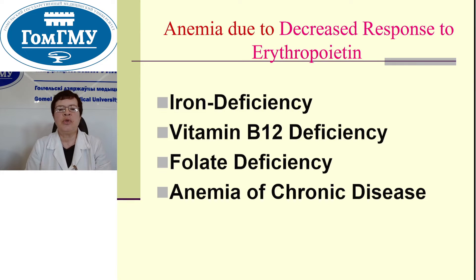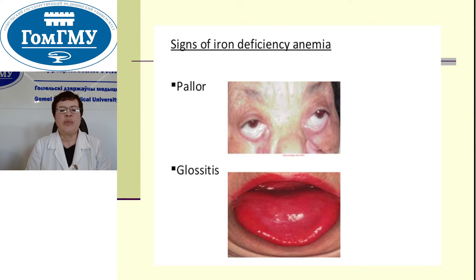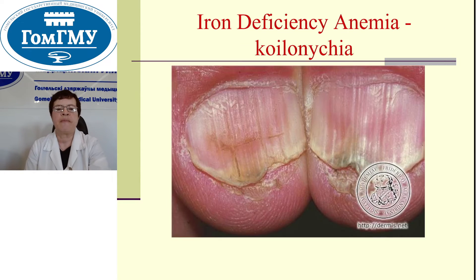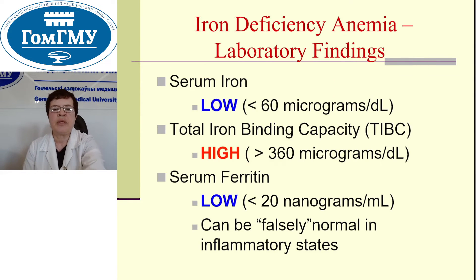Anemia due to decreased response to erythropoietin includes: iron deficiency, vitamin B12 deficiency, folate deficiency, and anemia of chronic disease. On this picture you can see the signs of iron deficiency anemia.